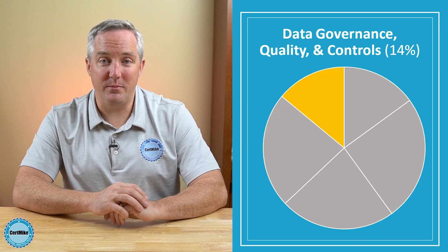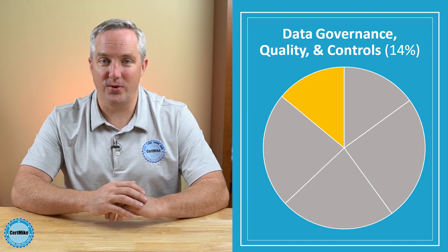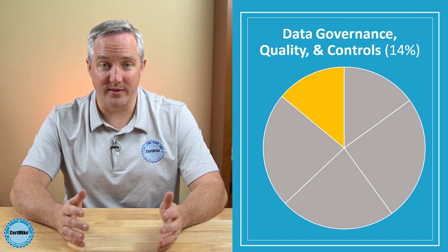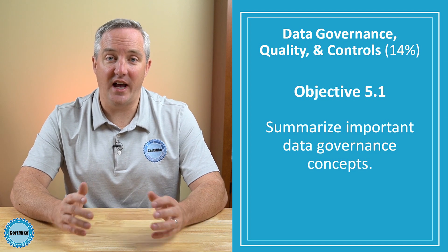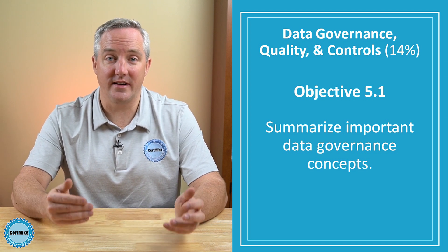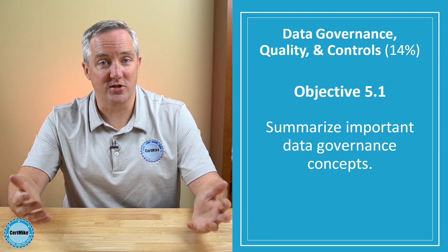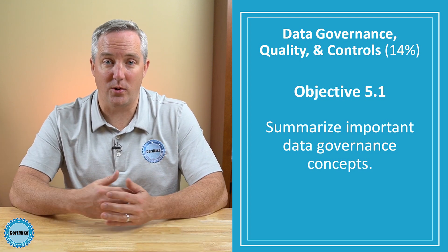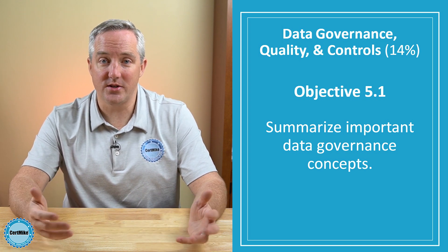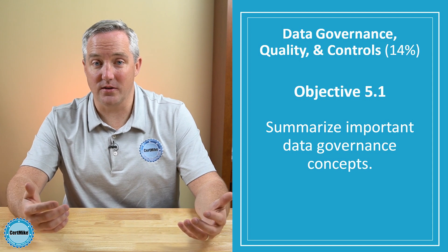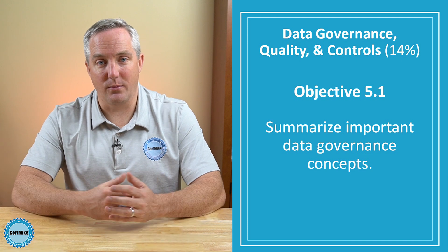Once you've finished that material, you can move on to the last domain: data governance, quality, and controls. This is the shortest of the five domains, and it only has three objectives. The first objective asks you to summarize important data governance concepts. You'll be asked about access and security requirements, storage requirements, and usage requirements. You'll also be asked to explain entity relationship diagrams, the use of data classification, different jurisdictional requirements, and your obligation to report data breaches.